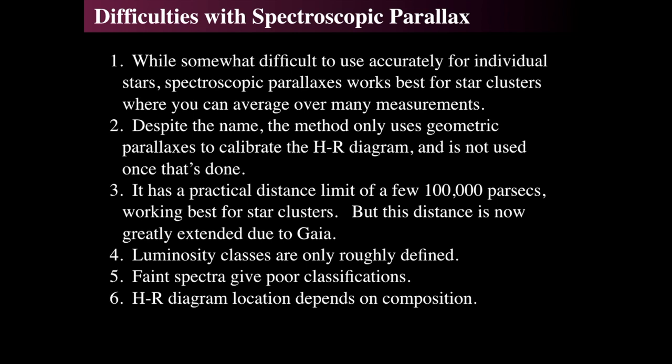Maybe you can't get the parallax for a particular star, but you can get its spectrum because the spectrum is in the light you're observing. You don't directly observe parallax unless you wait for the Earth to move around the Sun, and that's typically not how long it takes to do a spectrum. The practical distance using this technique is about up to 100,000 parsecs, but really that's best for star clusters, and it's now well extended due to the Gaia mission.